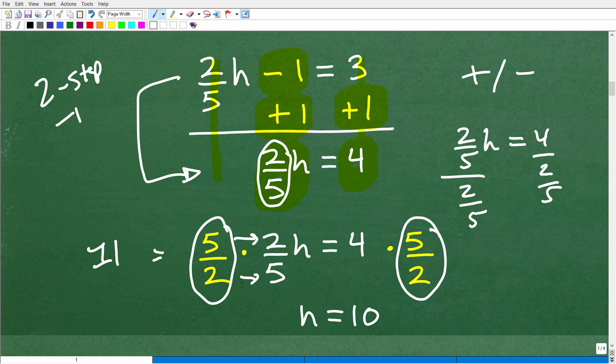That's called the reciprocal. So two fifths, if I flip it upside down, I have five halves. And now I'm going to multiply both sides of the equation by five halves because five halves times two fifths is going to be one or one h. That's what I want. I want to know what h is all by itself. So I can get a one h if I multiply by the reciprocal. So remember that little concept when you're dealing with a fraction in front of a variable. So we're going to multiply both sides of the equation by five halves. And when I do that, I get one h or h is equal to four over one times five halves. Anytime you have just a number like four times five halves, just put it over one. We're going to end up with four times five is 20, 20 divided by two is 10. The solution is h is equal to 10.